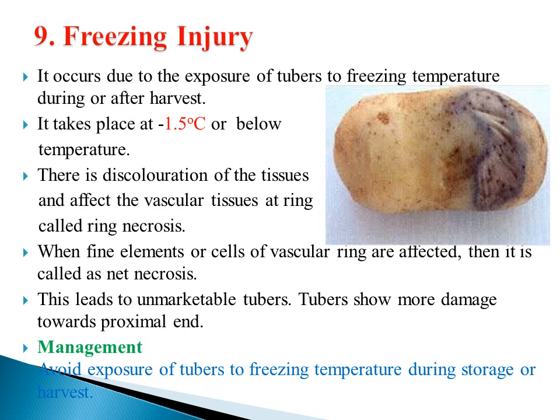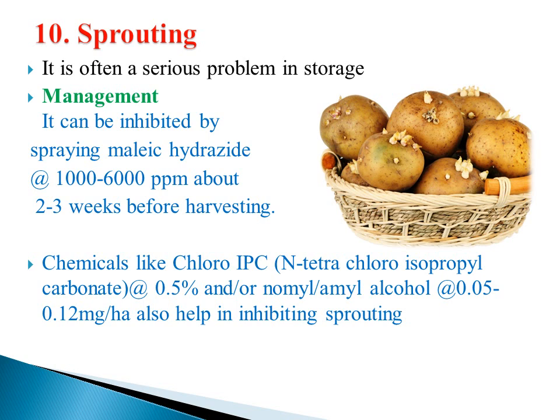The tenth disorder is sprouting, a serious problem in storage. Management: sprouting can be inhibited by spraying maleic hydrazide, a growth retardant, at 1000 to 6000 ppm about two to three weeks before harvesting. It can also be chemically controlled by chloro-IPC, that is N-tetra-chloro-isopropyl carbonate, at 0.5 percent, or by non-ethyl alcohol at 0.05 to 0.12 milligrams per hectare. Gamma ray radiation at the time of storage can also inhibit sprouting.